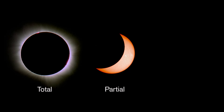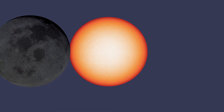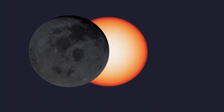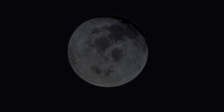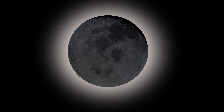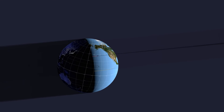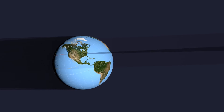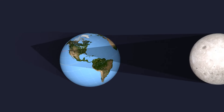There are three kinds of solar eclipses: total, partial, and annular. A total solar eclipse happens when the Moon lines up between the Sun and Earth such that it completely blocks the face of the Sun, creating a circular shadow on a small part of the Earth. People located in it will experience a total eclipse.